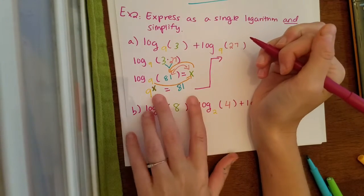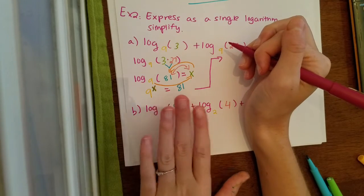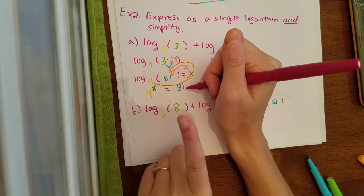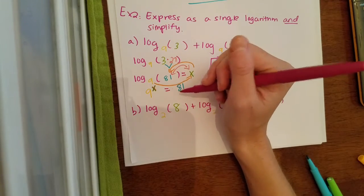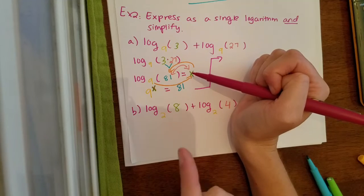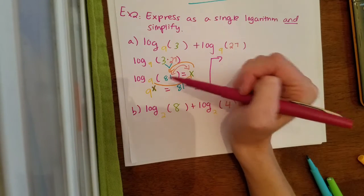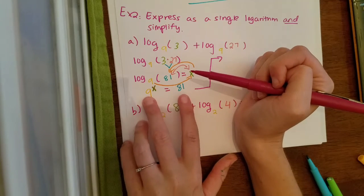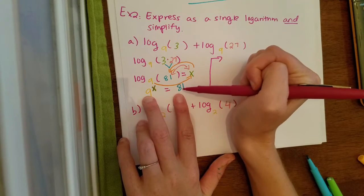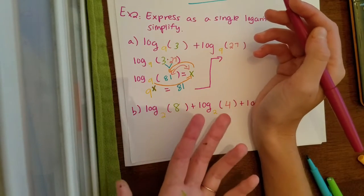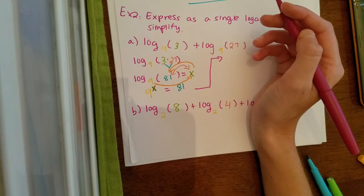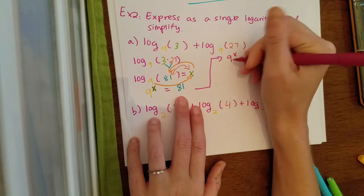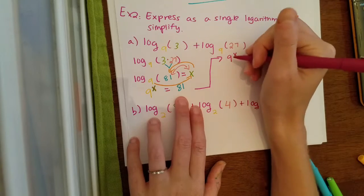Now we have to solve for x. When solving this, we want to get the same base on both sides. I need to think of something that goes into 9 and 81 and can be raised to an exponent to get both. Technically 3 goes into 9 and 81, but there is a larger number that works too — and the larger number you use, the less work you'll have to do. I know 9 goes into both 9 and 81, and I can raise 9 to a power to get 81, so I'm going to use 9 instead of 3.